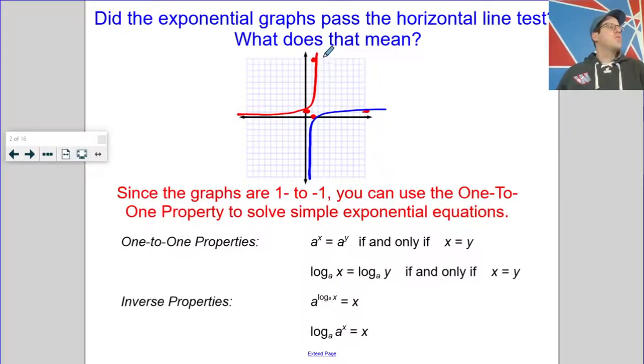All right. Put as simply as possible, here's what this means. If I say 10 to the x equals 10, there is only one place where that can happen. It's happening with a y value of 10 and an x value of 1. So there's only one place where that can happen. Same thing here.